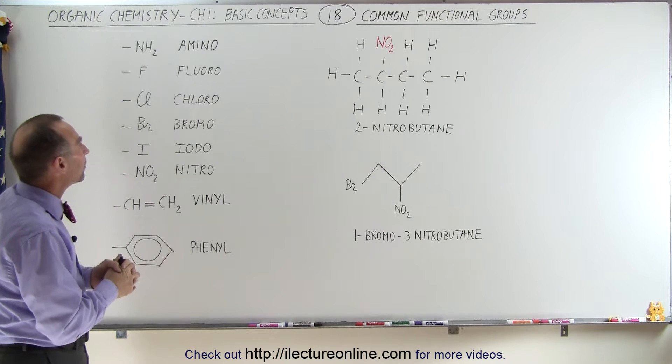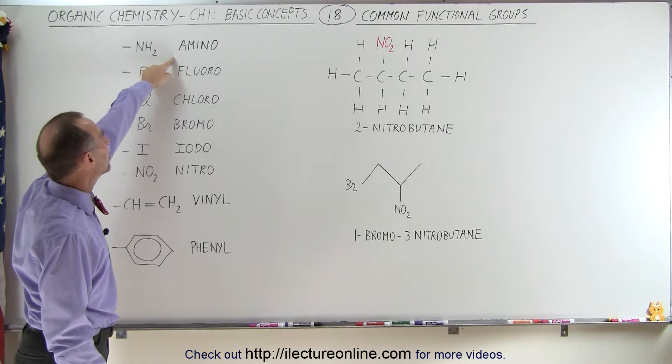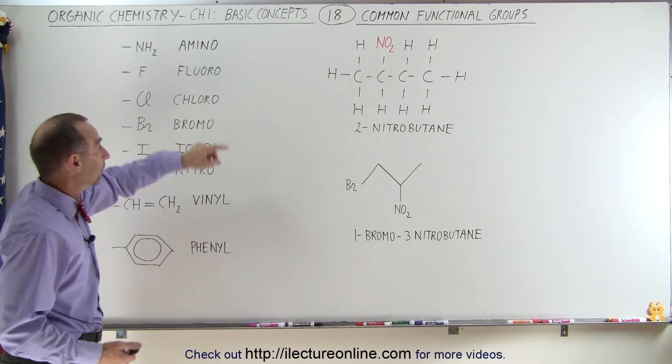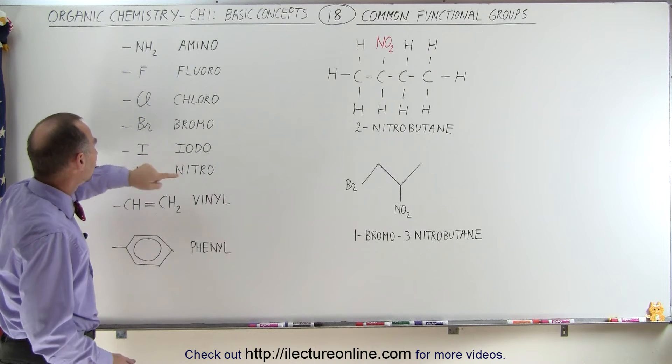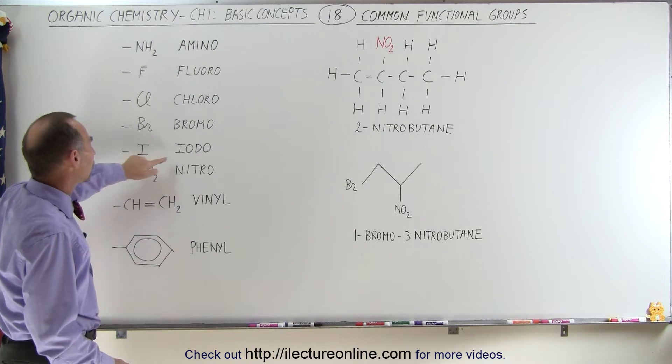Some of the more common functional groups are NH2, which is called amino, the fluorine atom, which is called fluoro when it's connected to the hydrocarbon, a chlorine atom, which is called chloro, a bromine atom, which is called bromo, an iodine atom, which is called iodo,